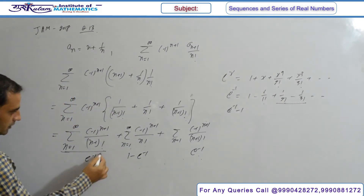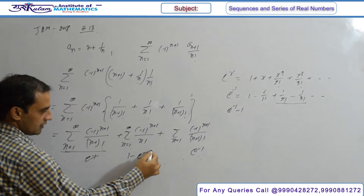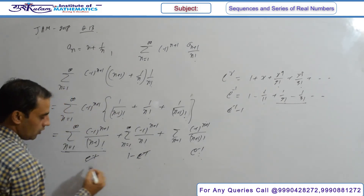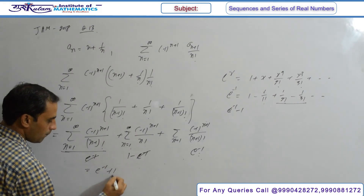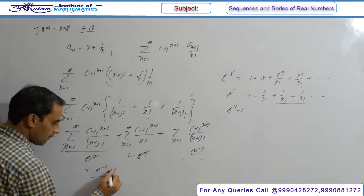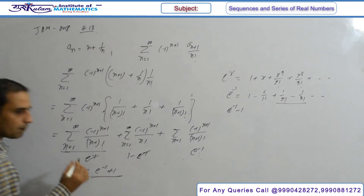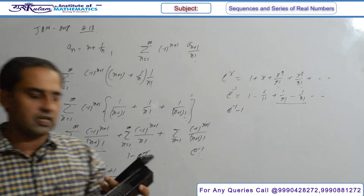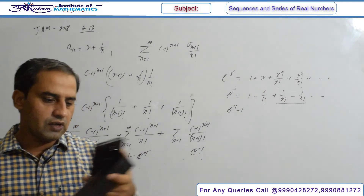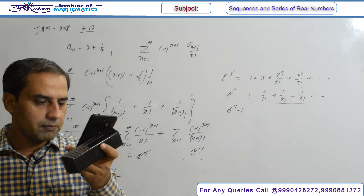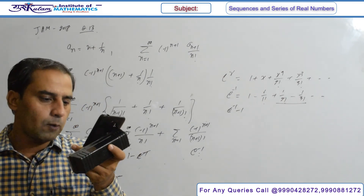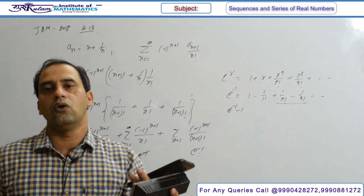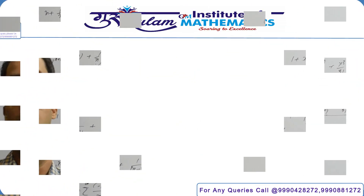So the overall sum: values cancel out and what remains is e^(-1) + 1. Just adjusting the terms, the final value is obtained. The option that matches here is option D, which should be true; all remaining options are false.